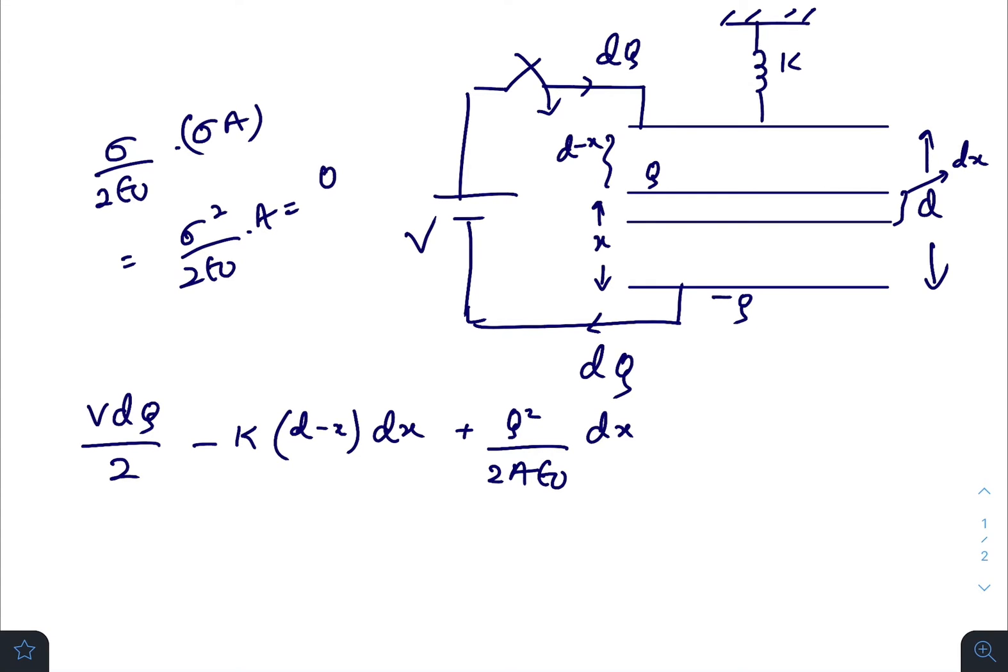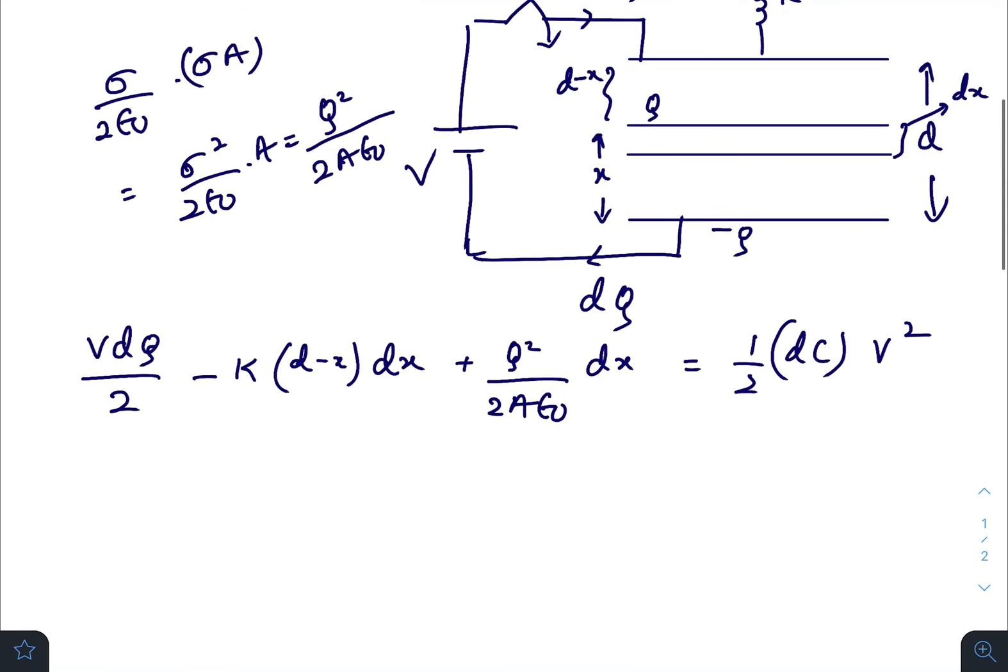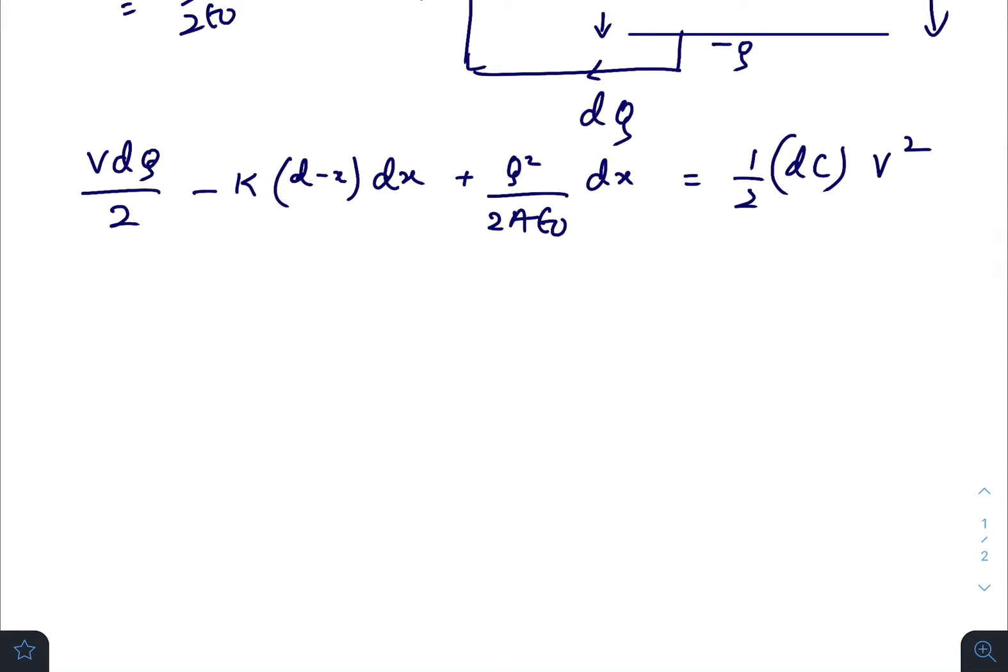So this is the force applied on the upper plate due to the lower plate, and the work done due to that force is utilized to increase the electrostatic potential energy inside the two plates, where dC is the increase in capacitance. We know that dQ equals to V times dC.